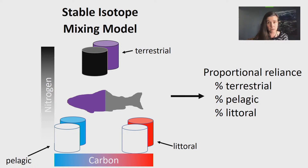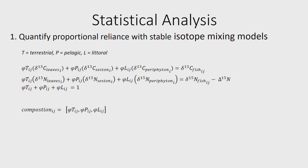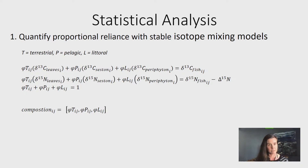I first quantified the proportional reliance on terrestrial, pelagic, and littoral sources for each fish according to the source values of the lake where that fish was captured. This means for each fish I had a composition of proportional reliance — three components summing to a whole — the portion of fish muscle tissue containing carbon fixed in a terrestrial habitat, a littoral habitat, and a pelagic habitat. The second step was to use the composition for each fish and complete a series of linear regressions to evaluate which predictor variables — littoral extent, terrestrial loading, and population abundance — best explain the changes to that entire composition.